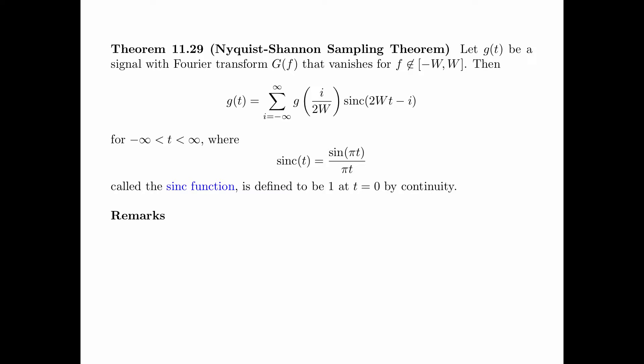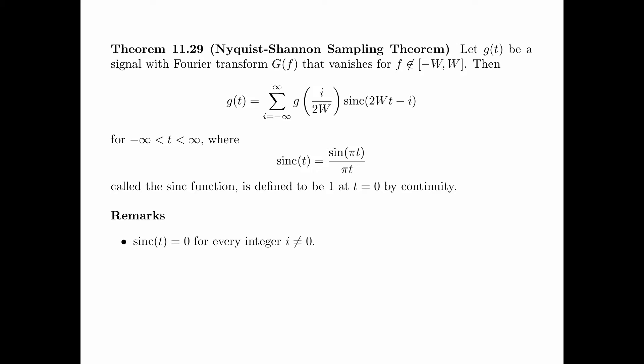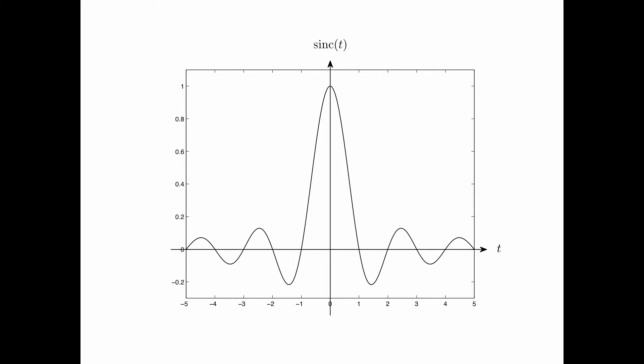Here are some remarks about the sampling theorem. In the reconstruction formula for g of t, the signal is sampled at rate 2w, because sampling points are taken at intervals of 1 over 2w. The rate 2w is called the Nyquist rate. The sinc function sinc of t is equal to 0 for every integer i not equal to 0. This is a plot of the sinc function: at t equals 0 it takes the value 1, and at integer values other than 0, the function takes the value 0.